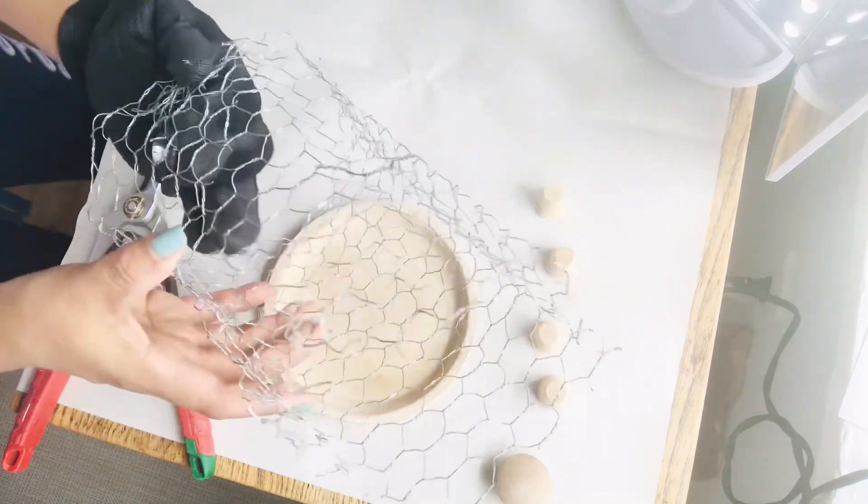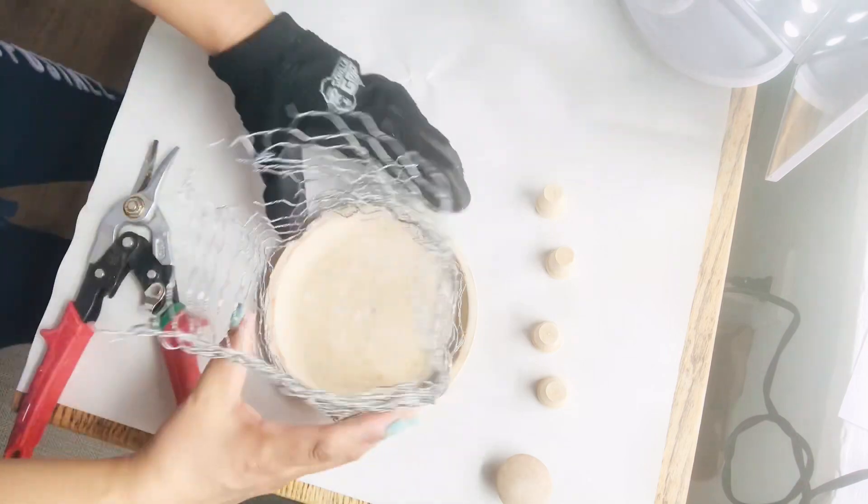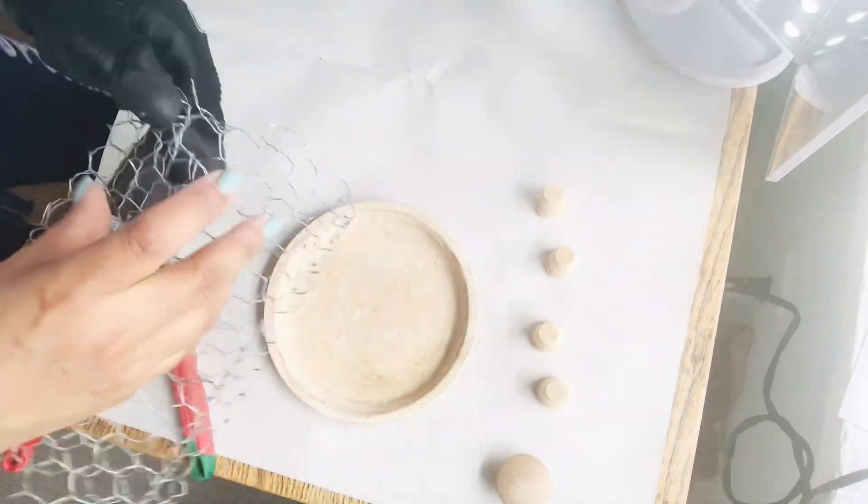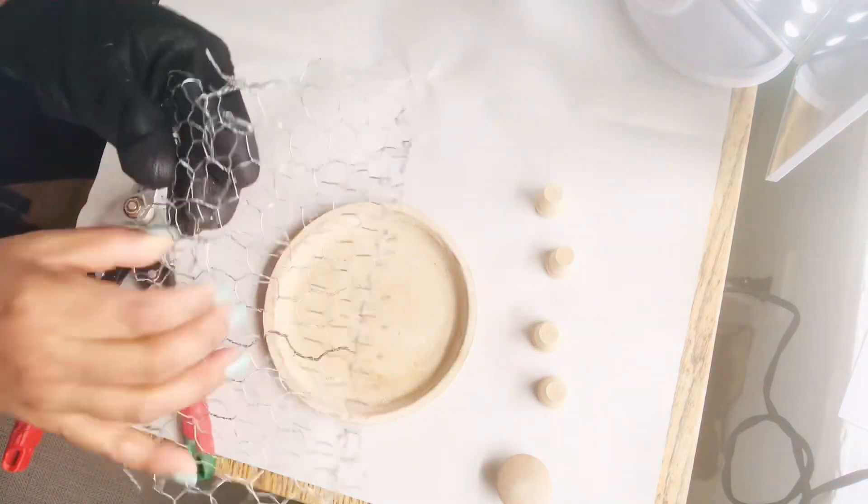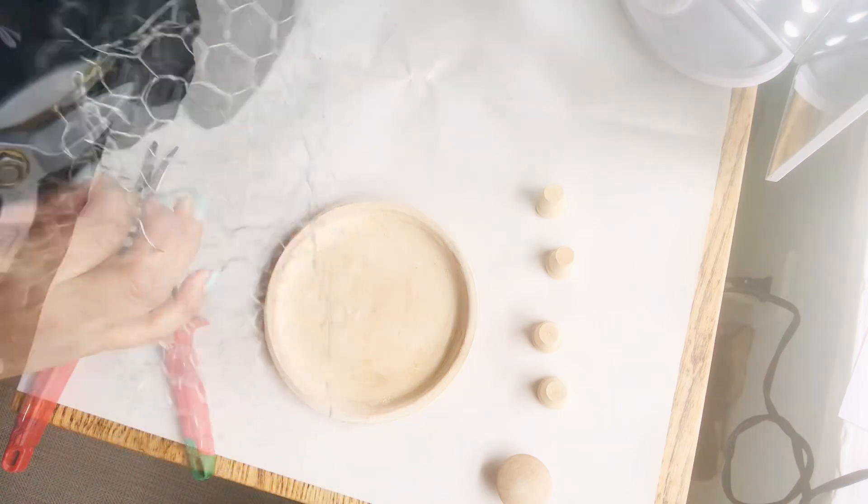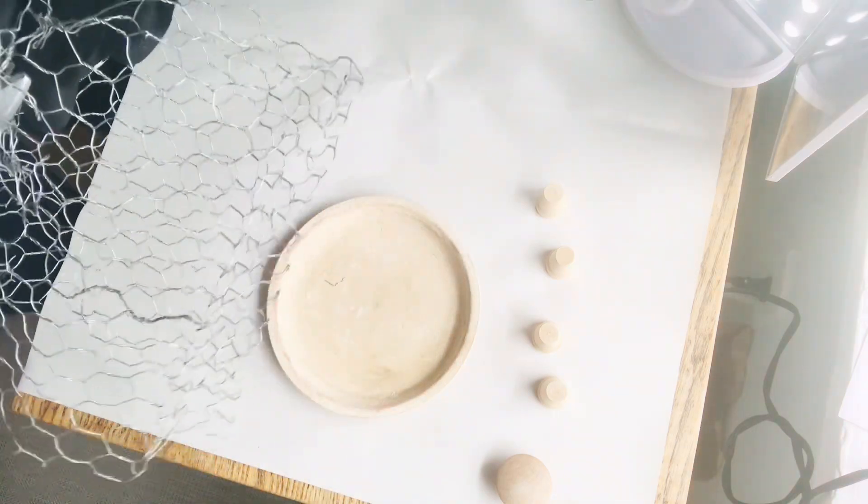For this I'm going to use gloves since this wire is very pointy and here I'm trying to give it the shape of the clutch and also join the little pieces of wire together.